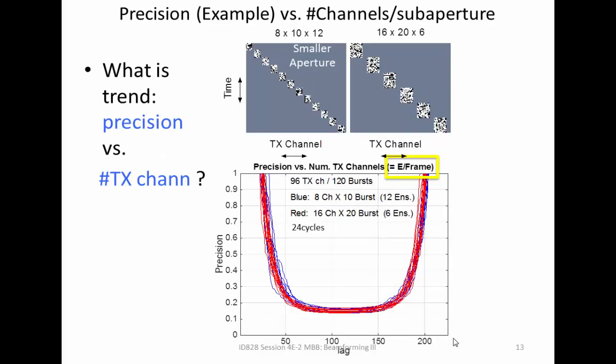We'd like to look at the effect of increasing the number of channels processed or transmitted simultaneously, and what effect that has on precision. If we normalize for equal energy per frame, the precision is about the same, but we're reducing the transmit voltage by the square root of the number of channels shot simultaneously. This has implications for tissue motion — how many channels do you want to transmit simultaneously? We tried smaller apertures to see if they would behave differently under tissue motion.